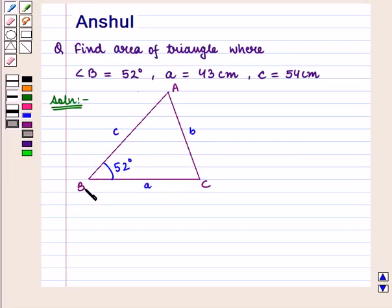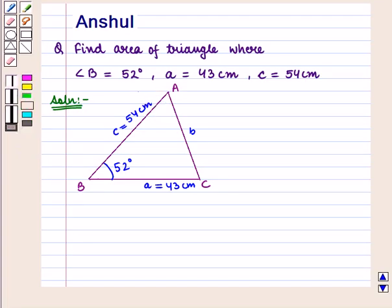length of side BC which is denoted by A is equal to 43 cm and length of side AB which is denoted by C is equal to 54 cm.